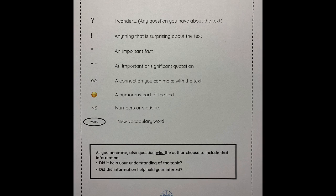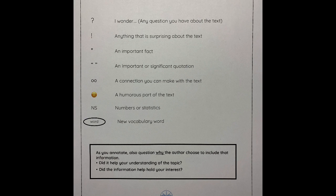Let's go through some of these annotation codes for nonfiction. The first is a question mark, which represents any questions you have as you are reading — like 'I wonder' statements — anything that leaves you wondering or wanting to look up more later. An exclamation mark is for anything that is surprising. If anything surprises you about the text, you mark it with an exclamation mark. The asterisk, or little star, is for any important facts. Quotation marks are for an important or significant quotation.